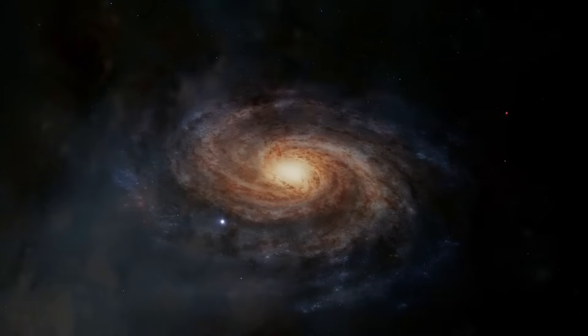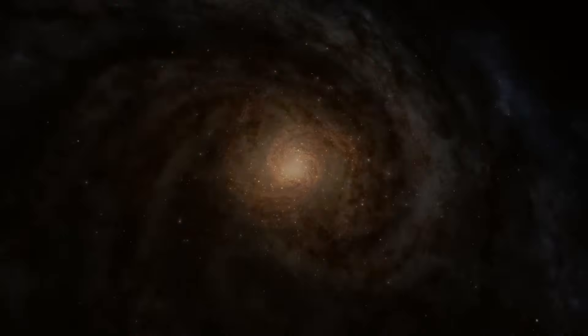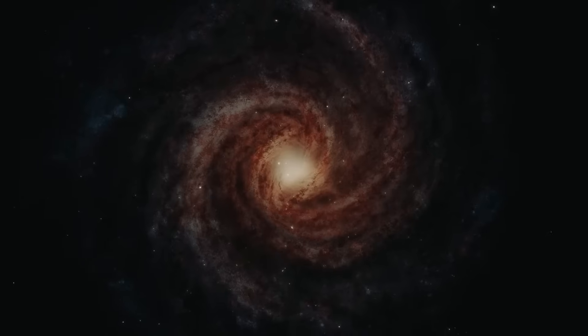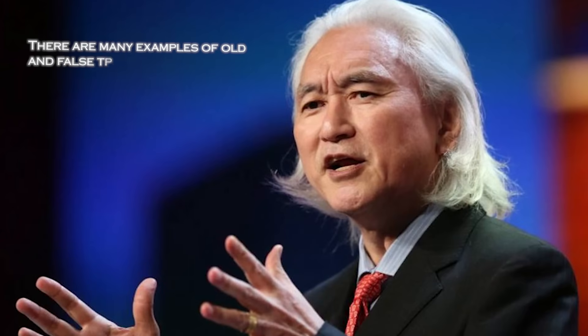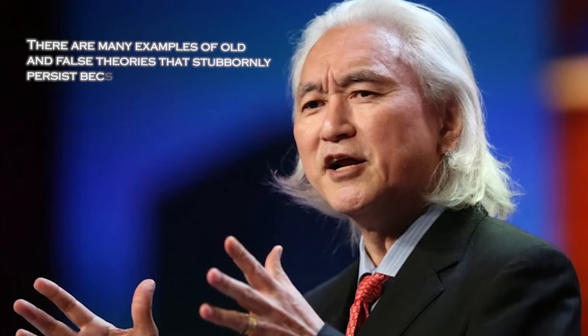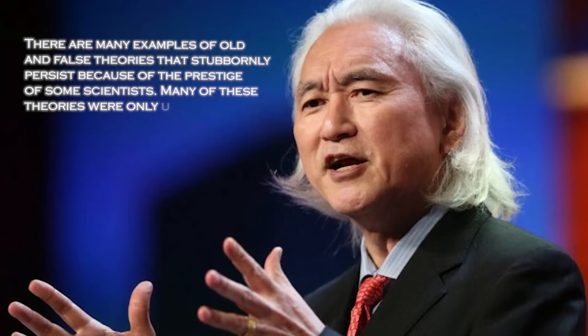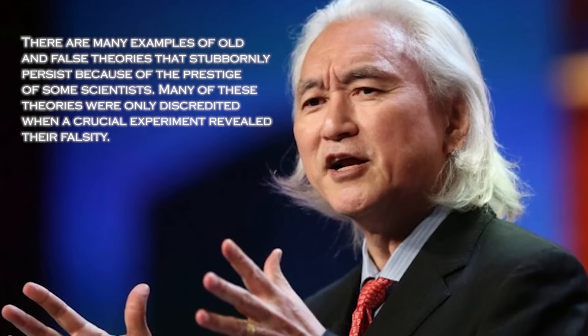This circumstance is difficult to accept for conservative science, which still finds problems with this model, and some branches of physics vehemently refuse to accept this discovery and question possible errors in the age calculations. Michio Kaku was aware of this and had this to say: there are many examples of old and false theories that stubbornly persist because of the prestige of some scientists. Many of these theories were only discredited when a crucial experiment revealed their falsity.